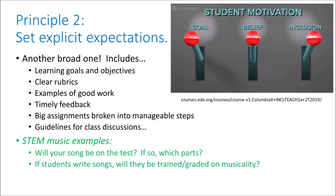Moving on to principle two: set explicit expectations. We want to give clear assignments, provide clear rubrics, and timely feedback. Columbia tells us that setting explicit expectations will positively influence the three levers of student motivation: goal, belief, and inclusion — meaning students value the course goals, believe they can meet those goals, and feel a sense of belonging. In the context of STEM music, we could ask: if you present students with a content-related song, will that song be on the test? Which parts are they responsible for? And if students are writing songs, will they receive training on the musical aspects of songwriting and be graded on such things?